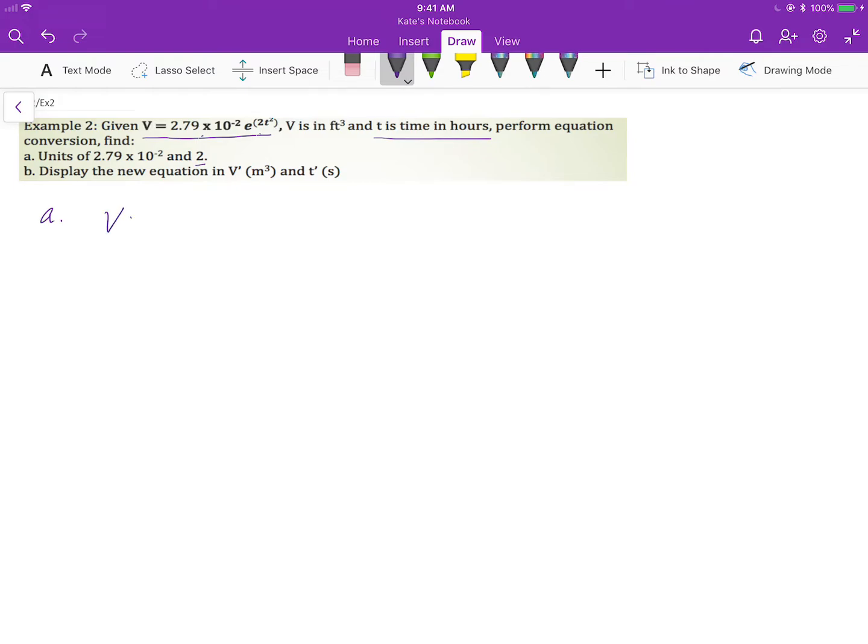The left of the equation is given unit is cubic feet. Therefore, you can find out the unit for 2.79 times 10 to negative 2 has to be cubic feet.